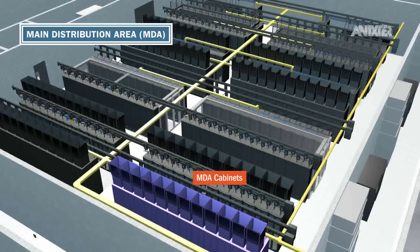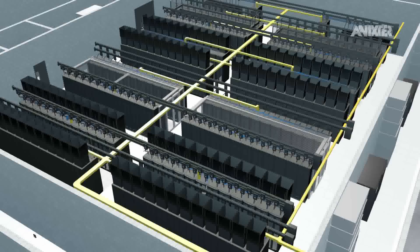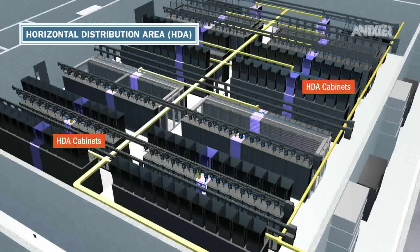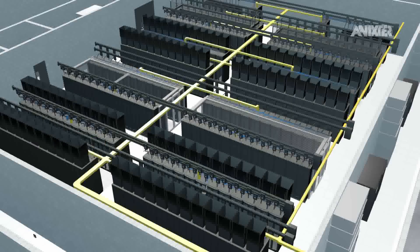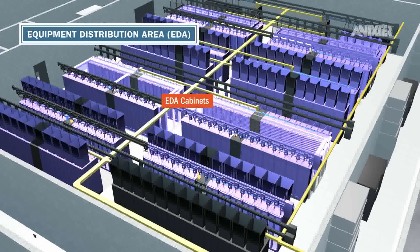Aggregation layer equipment such as LAN, SAN and KVM switches are located in the horizontal distribution area, while the equipment distribution area includes additional IT access layer equipment such as servers.